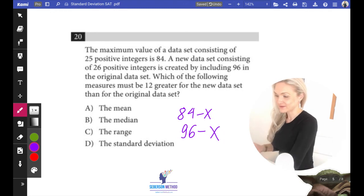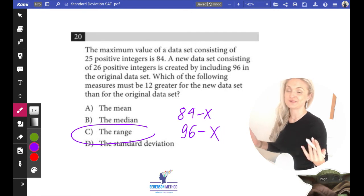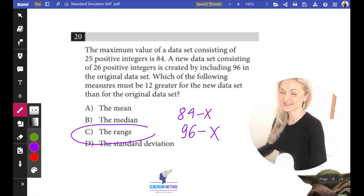What's going to be 12 greater? It's going to be the range. You cannot calculate the mean, you cannot calculate the median, you don't have enough data about the set. So although this problem includes the word standard deviation, it has nothing to do with standard deviation. I'll see you in the next video.